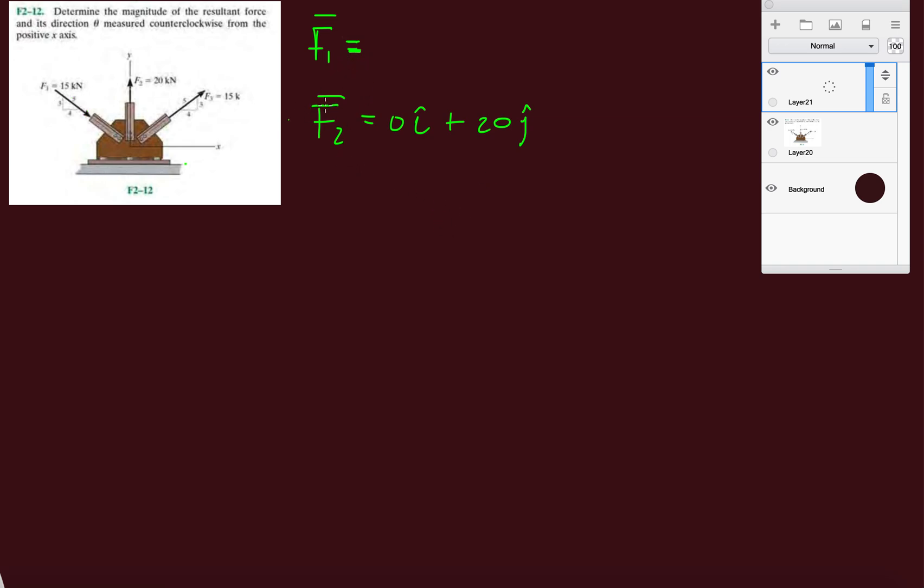Let's go back to F1. So F1 is, it's pointing to the right and down. So it should have a positive X component. So it's going to be 15 times four-fifths minus 15 times three-fifths J.